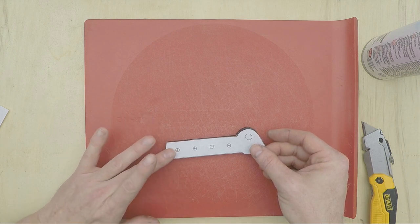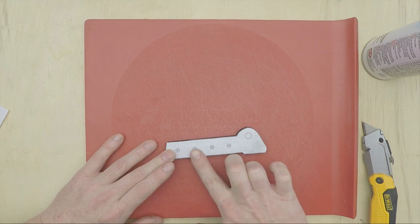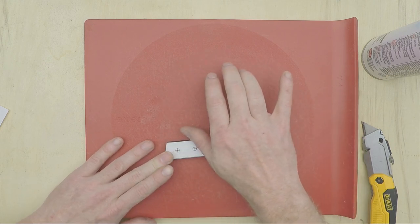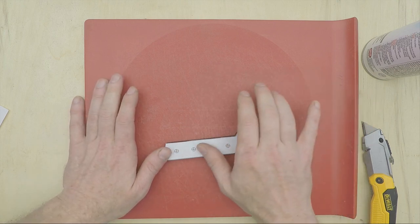Typically I'll start in one corner, get it tacked down, then line up another corner along the best edge, tack that down, and then work my way across the piece from there.